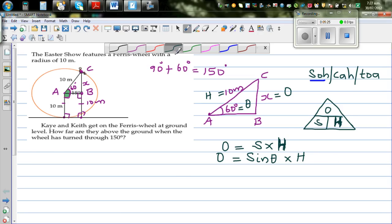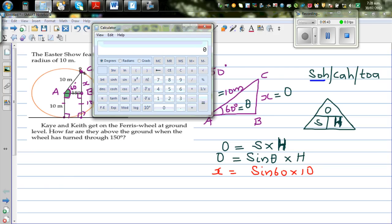So now let me substitute. What is O? O is X. X is equal to sine 60, sine 60 times your hypotenuse, which is 10. And now you use your calculator. So let me get my calculator. I will set this in degrees—it is already in degrees.